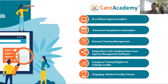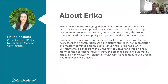There's an external training management option so anything outside of what Care Academy offers can be uploaded onto the platform — all in one concise place for documentation, which is essential for surveys. We also offer integrations with leading home care agency management software such as Access Care, ClearCare, Alaia Care, and ERSP. Our caregiver training programs are eligible for college credits, enabling educational pathways for direct care workers, and we offer engaging mobile-friendly classes that enable caregivers to take training when and where they need it.